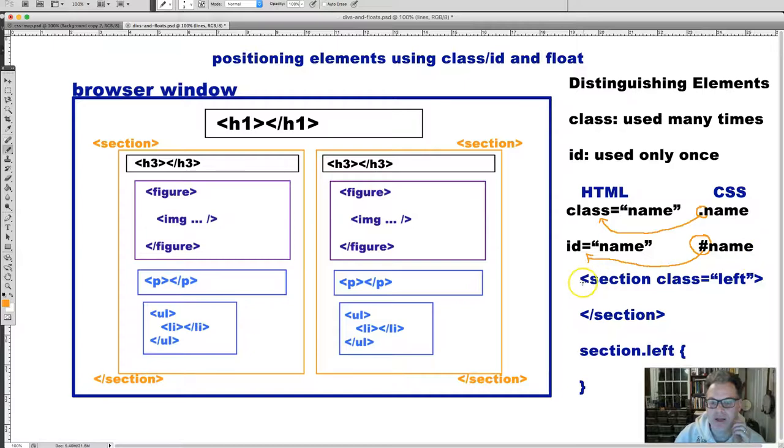It would be very nice if we would just be able to write class in our CSS document and write ID in our CSS document. But we cannot. We have to use this little period and we have to use this little ID when we're doing this. For example, in my HTML, this is our HTML right here, I would write in section class equals left. Or if I was doing positioning the right one, I would do section class equals right. And then I close that section down at the bottom. And then in the CSS, I would write section dot left. Or I would do section dot right. And again, I'm just using this section as an example here because we're going to be positioning our sections.